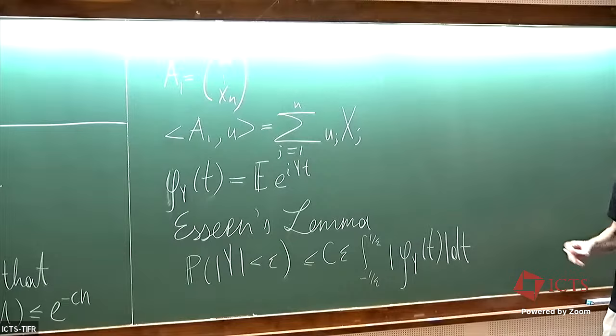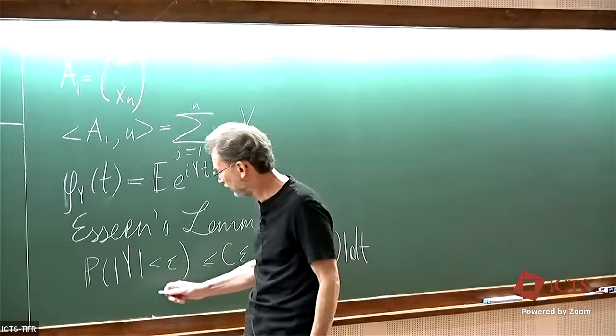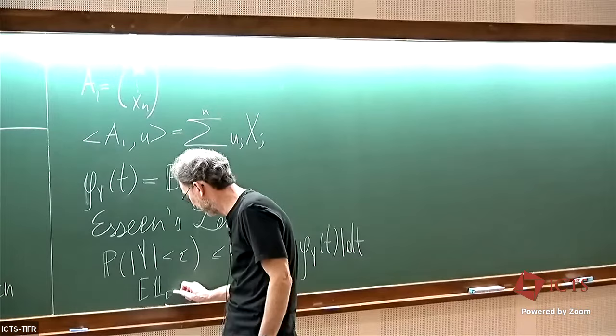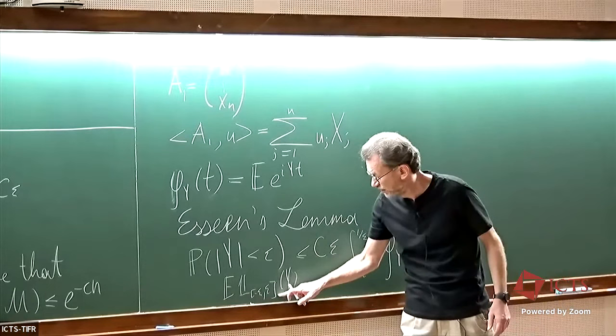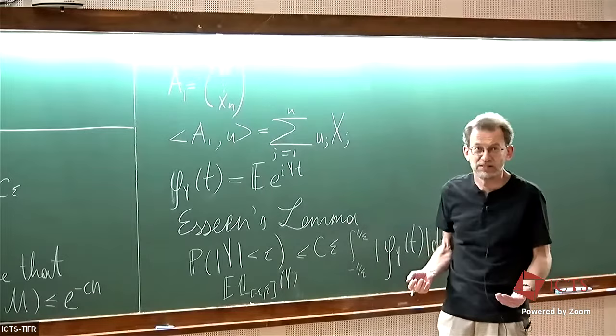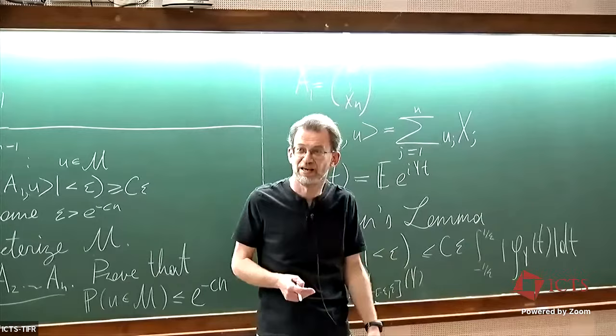This is a rather easy result — it is actually the uncertainty principle. The probability that y is less than or equal to epsilon is the expectation of the indicator of the interval (−epsilon, epsilon) evaluated at y. The indicator's support is (−epsilon, epsilon). By the uncertainty principle, the Fourier transform will be concentrated in the interval (−1/epsilon, 1/epsilon), and this is a formalization of that intuitive idea.